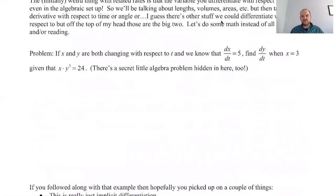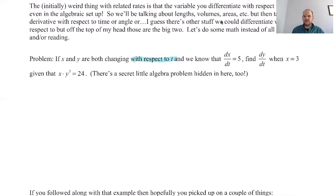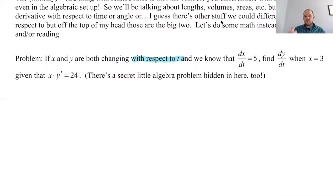But let's actually do a problem and see what's happening. So if x and y are both changing with respect to t, so this is interesting. With respect to t means that t is the independent variable. So x is a function of t. y is a function of t. So both of them change with respect to time. For example, you might have two people that are running away from each other. And so the distance of the first person from the starting point is a function of time. The distance of the second person from the starting point is also a function of time. And they'll have different rates of change. So in this case, we know that dx/dt is 5, and we want to find dy/dt.